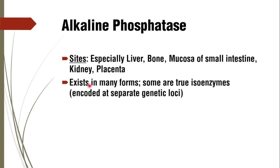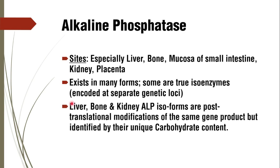Alkaline phosphatase exists in many forms — some are true isoenzymes and many are isoforms. That is why we are taking alkaline phosphatase in detail in this session. True isoenzymes must be encoded by separate genetic loci. Importantly, liver, bone, and kidney alkaline phosphatase are isoforms, not true isoenzymes — they are synthesized from the same genetic locus.